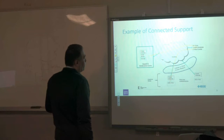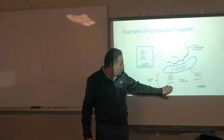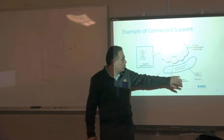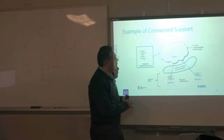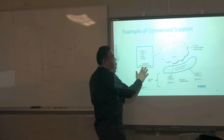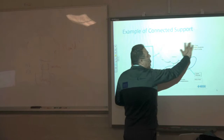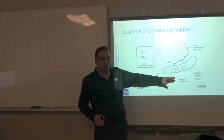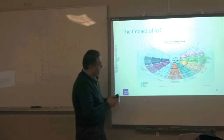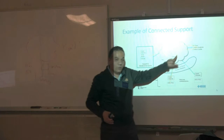Here's an example of a connected support architecture: you have a distribution control system connected through a constant gateway. Multiple of these connect through cellular, wired, or RF to the internet, then to a third-party communication and control center connected to a support and maintenance center. Data flows one way; if there's actuation it goes back. Think of a door — sensor detects someone, data goes to the cloud where you access it, and you send actuation back to open the door.